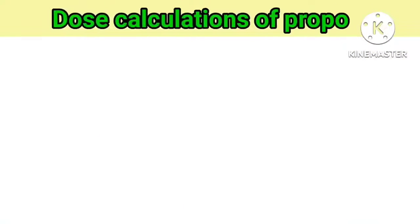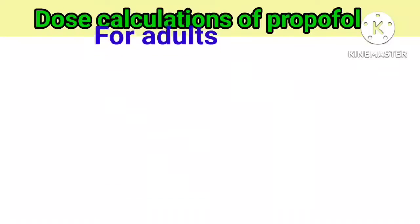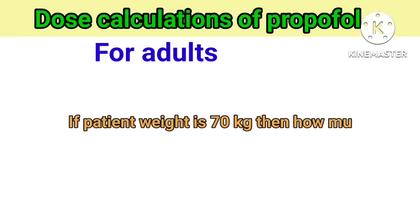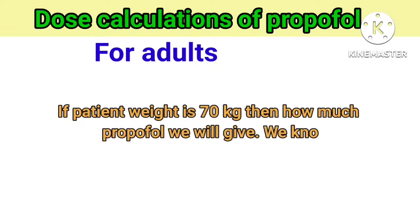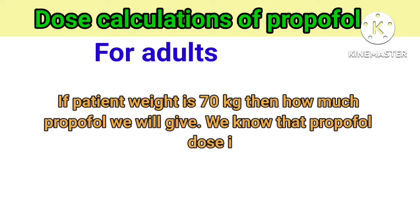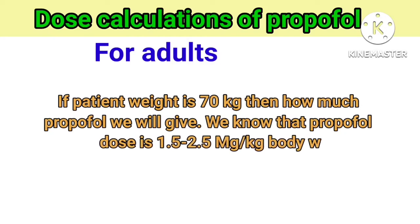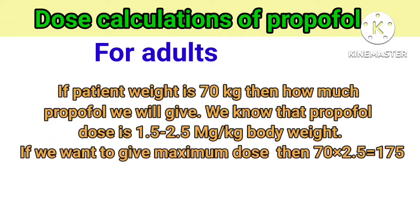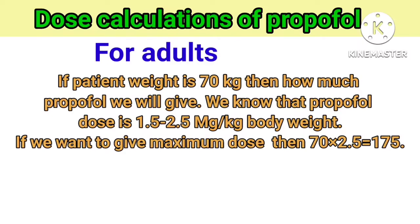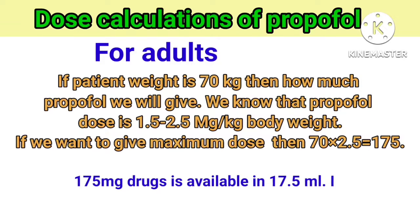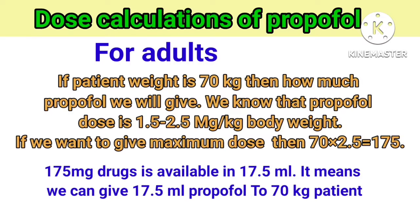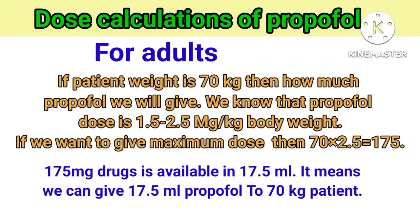Dose calculations of Propofol for adults: if a patient weighs 70 kg, the dose is 1.5 to 2.5 mg per kg body weight. For maximum dose: 70 multiplied by 2.5 equals 175 mg. Since 175 mg is available in 17.5 ml, we can give 17.5 ml of Propofol to a 70 kg patient.